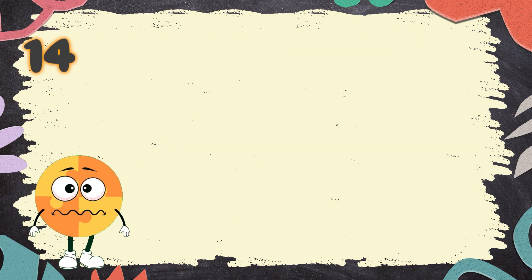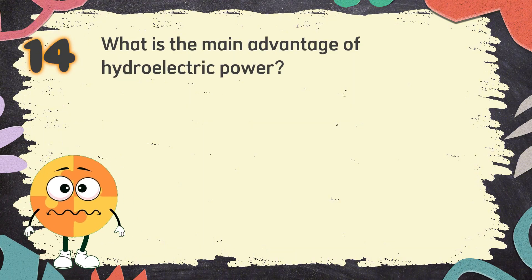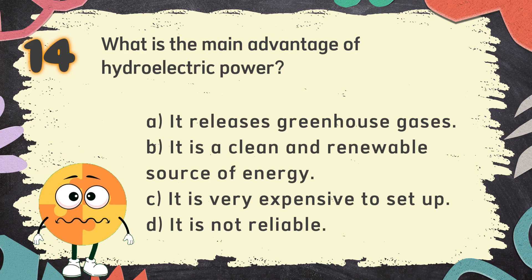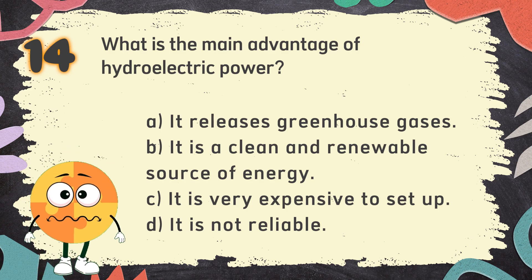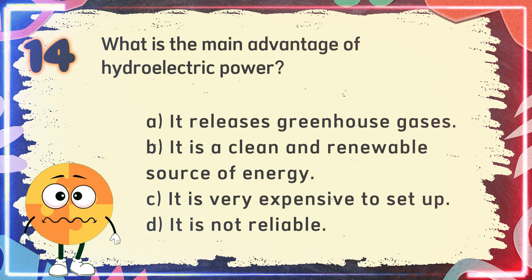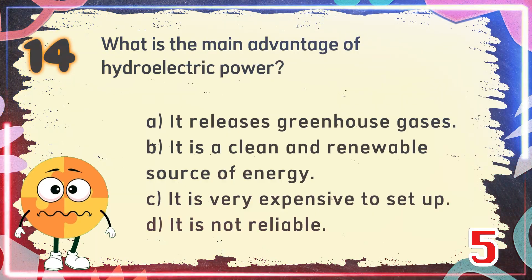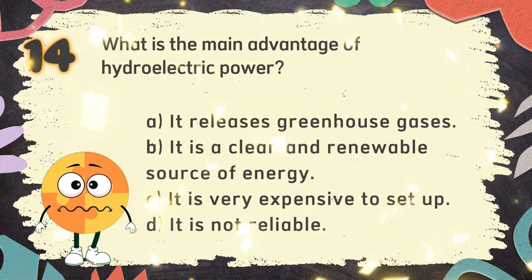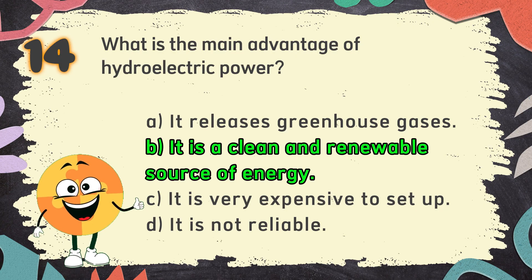Number 14: What is the main advantage of hydroelectric power? The choices are: A. It releases greenhouse gases, B. It is a clean and renewable source of energy, C. It is very expensive to set up, D. It is not reliable. The correct answer is B. It is a clean and renewable source of energy.